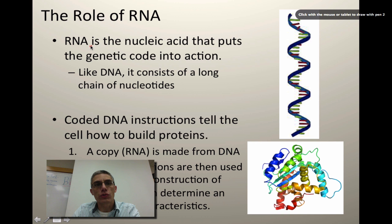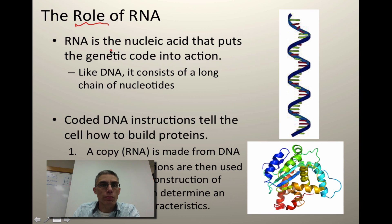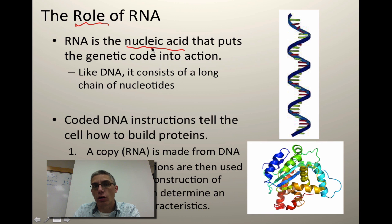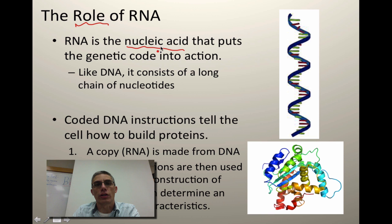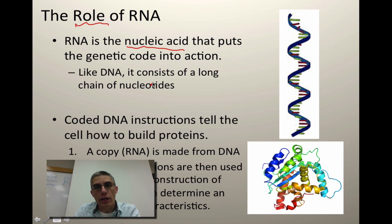The very first thing we need to do is establish what is the role of RNA. RNA is a nucleic acid, and remember, a nucleic acid is a macromolecule — so it's a really big molecule — and we're talking about a polymer. A polymer is a long strand of monomers, those very small tiny bits that make up that long chain. RNA is a nucleic acid that puts the genetic code into action. We're taking the information from the DNA and changing it into a form that can actually be used to produce the proteins. So like DNA, it does consist of a long chain of nucleotides.